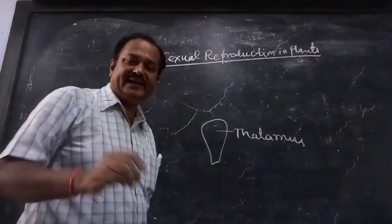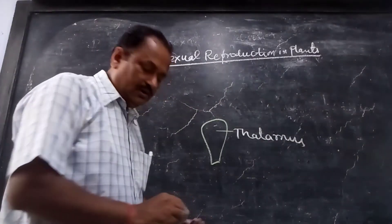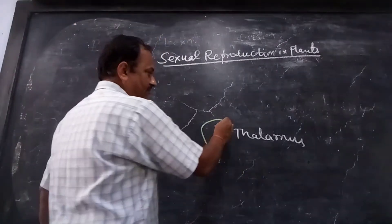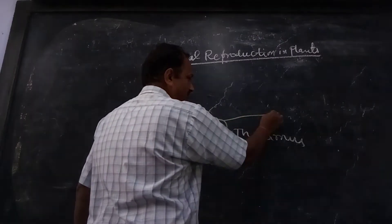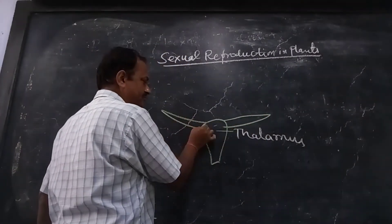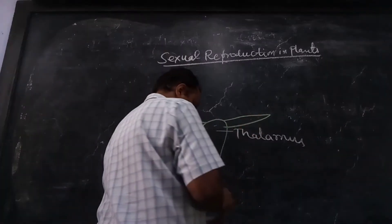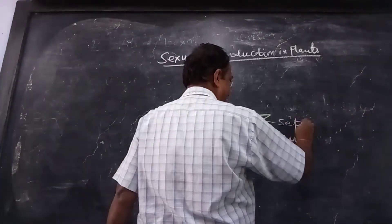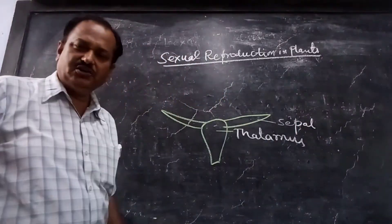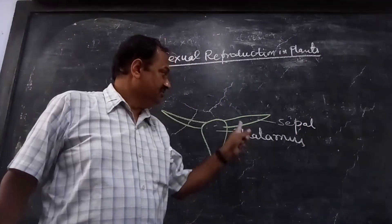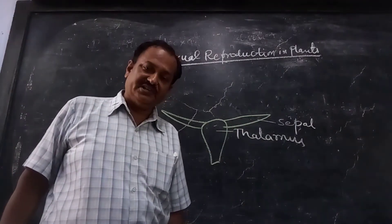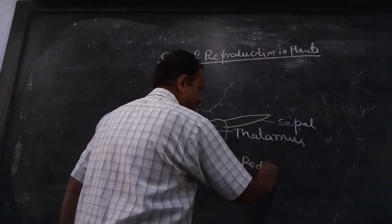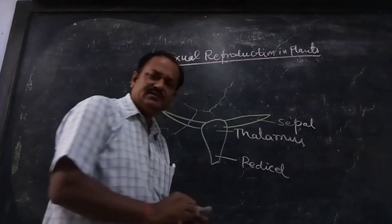The thalamus is the base of the flower. Around the thalamus you must have seen some green leaves — they are called sepals. In all flowers, green colored sepals are present, and they form the outermost whorl called the calyx.